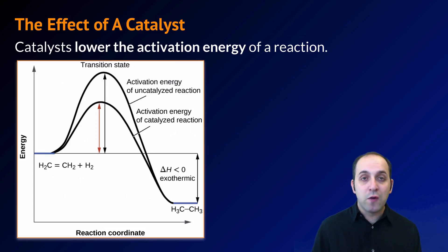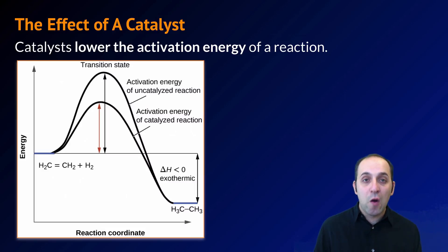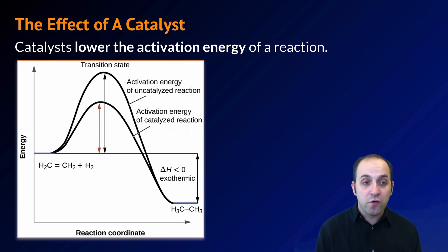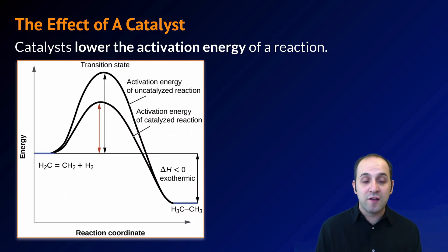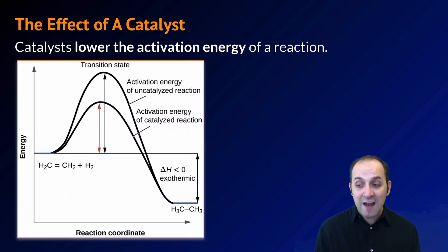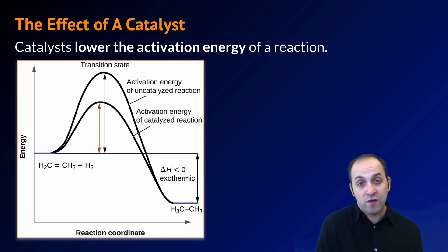The other thing we can understand by looking at a potential energy diagram is the effect of a catalyst. A catalyst lowers the activation energy necessary for a reaction to occur — we need to put in less energy to get our reactants into the transition state. The red arrow represents the activation energy of the catalyzed reaction, and you can see it's considerably shorter than the black arrow, which is the activation energy of the uncatalyzed reaction. That's what a catalyst does: it provides a different pathway at a lower activation energy, which increases the rate of the reaction.